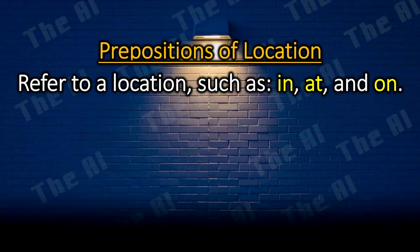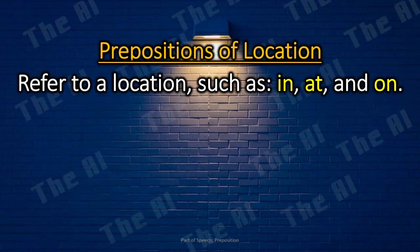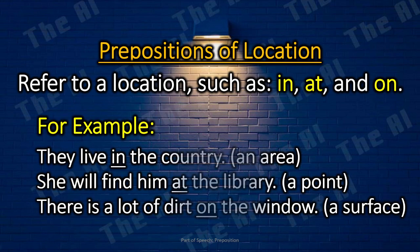Prepositions of location. The prepositions of location refer to a location, such as in, at, and on. For example: They live in the country. She will find him at the library. There is a lot of dirt on the window.